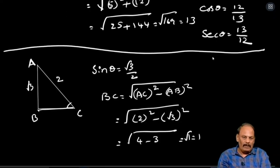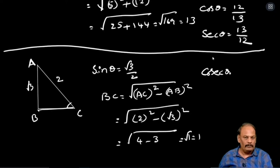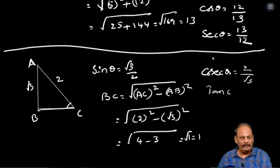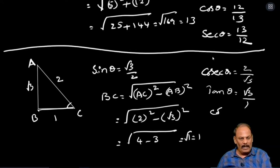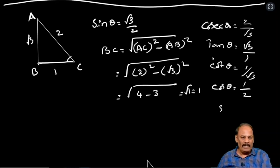Now we need other trigonometric functions. Cosecant theta: reverse to the sine, that is 2 by root 3. Tan theta: opposite by adjacent, that is root 3 by 1. Cot theta: reverse to the tan, that is 1 by root 3. Cos theta: adjacent side by hypotenuse. Secant theta: reverse to the cos, that is 2 by 1.